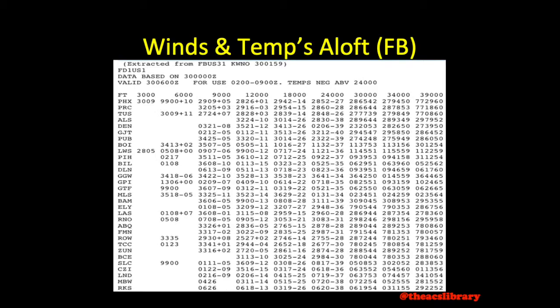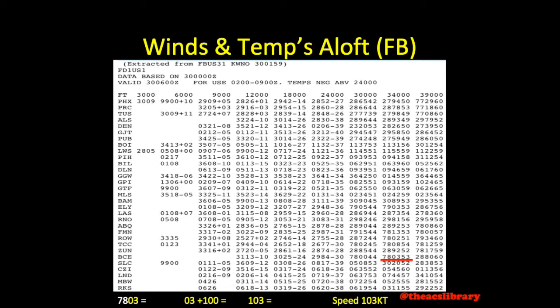Light and variable winds or winds below 5 knots will be coded 9900 followed by temperature. Looking at the underlined example, we notice that there is no such thing as heading 780. Winds with speeds between 100 and 199 knots are decoded by subtracting 50 from the heading, leaving us with a heading of 280, and adding 100 to the speed, leaving us with a speed of 103 knots. So 780353 may be decoded as winds from heading 280 at 103 knots, temperature negative 53 degrees Celsius because we are above 24,000 feet.